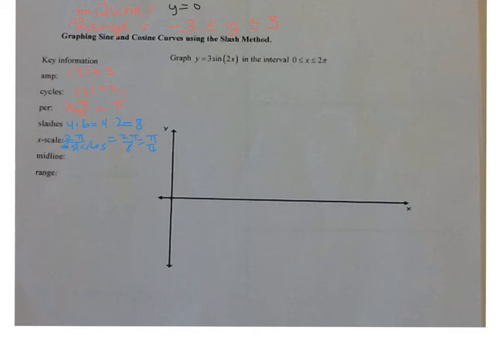Your midline is what's being added or subtracted at the end. There is nothing being added or subtracted at the end, so it's just y equals 0. And your range — we're going up and down to 3 from 0 — so it's negative 3 is less than or equal to y is less than or equal to 3.